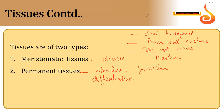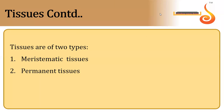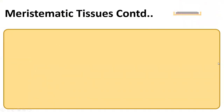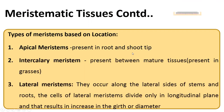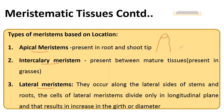In this video we will quickly see the classification of meristematic tissue. Meristematic tissues can be classified based on various criteria. Based on their location, we group them into three types: apical meristems, intercalary meristems, and lateral meristems. Apical meristems are present towards the tip of the root and shoot — the meristems are located at the tip of the shoot and at the tip of the root.